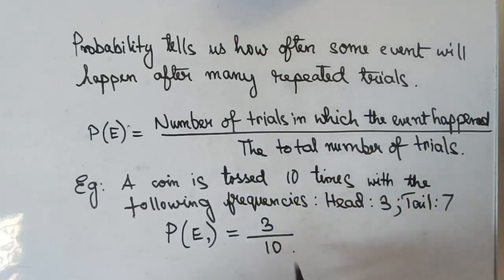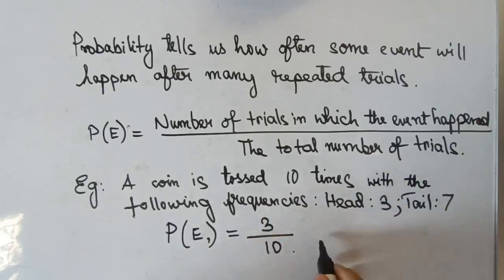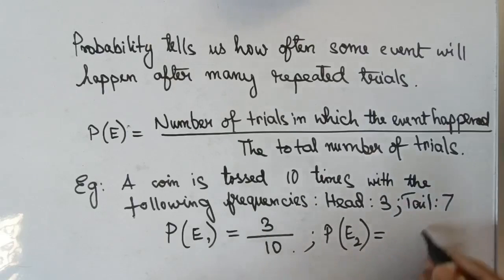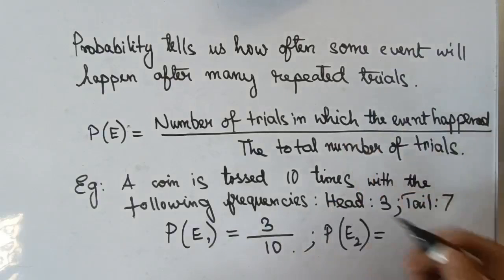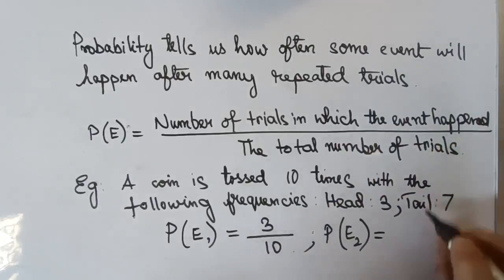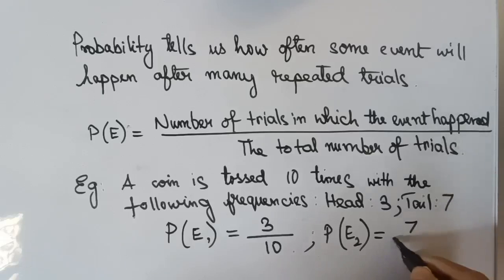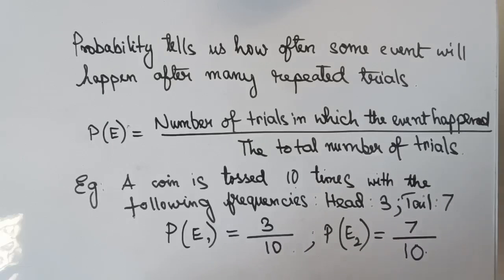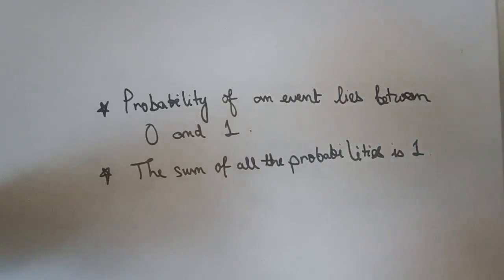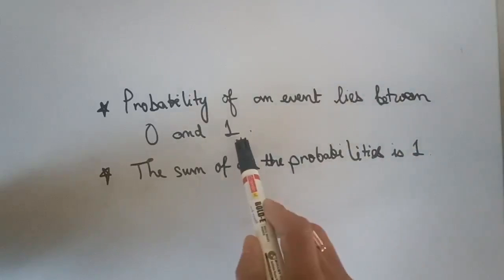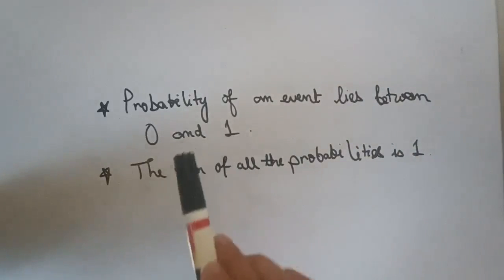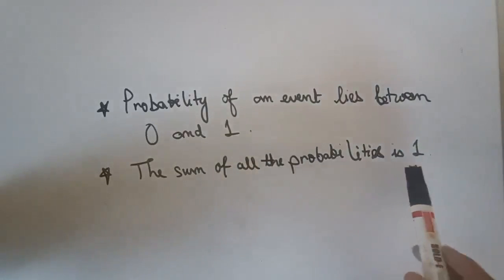That is 10 trials, so the probability of getting a head is 3 by 10. Similarly, the probability of getting a tail is 7 divided by 10, which is 7 by 10. Two important points: the probability of an event lies between 0 and 1, and the sum of all probabilities is equal to 1.